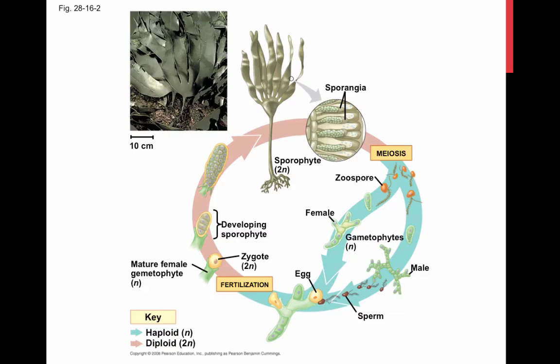A variety of life cycles have evolved among the multicellular algae, and this is called alternation of generations. The most complex life cycles include an alternation of multicellular haploid stages and multicellular diploid stages.